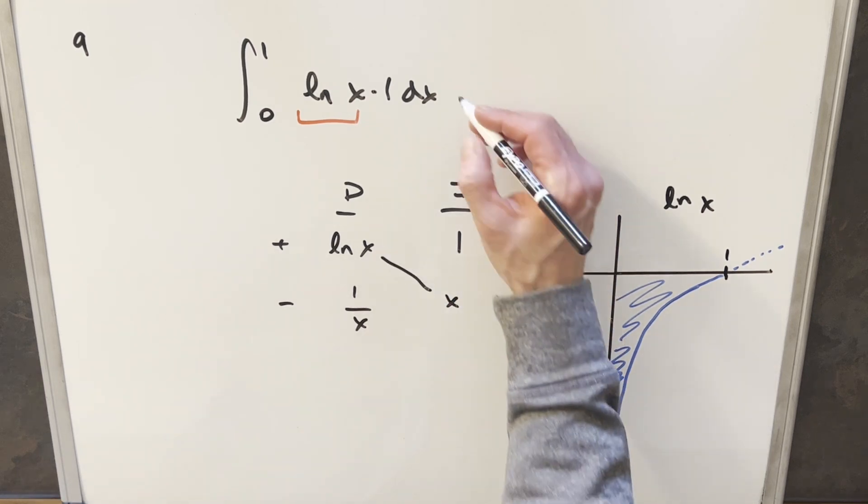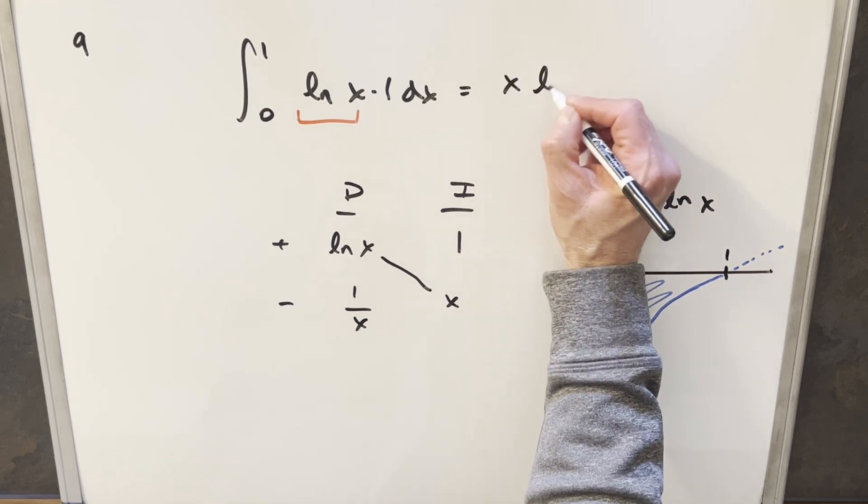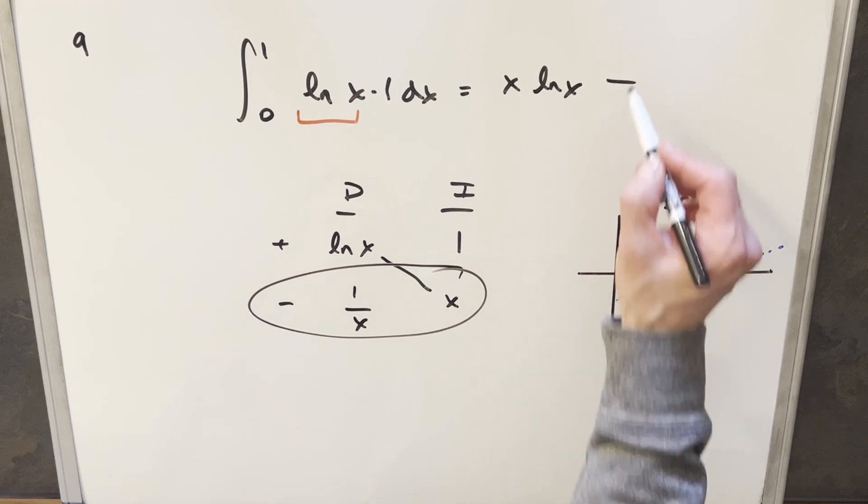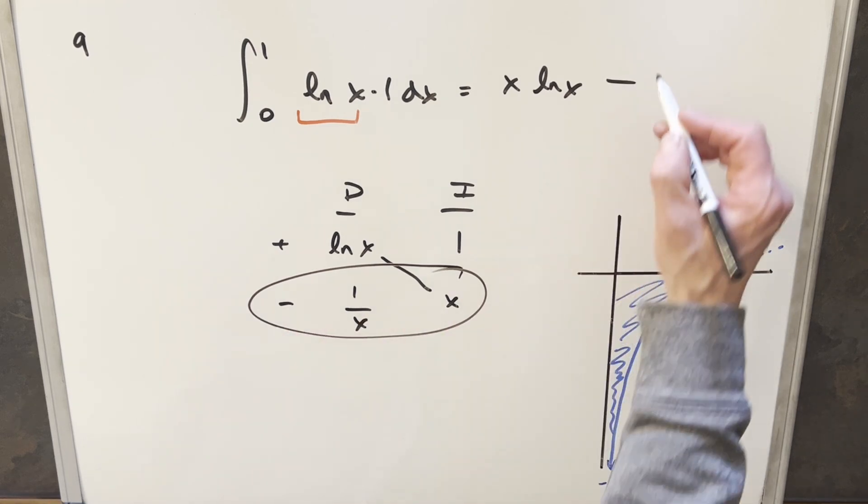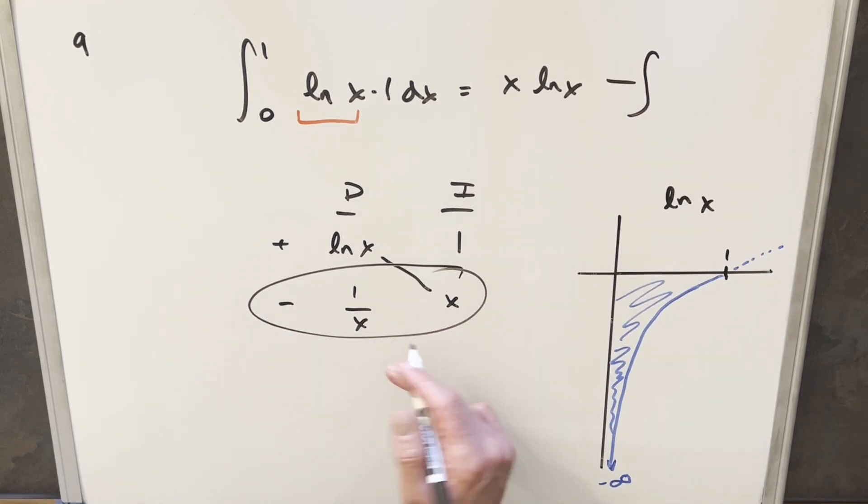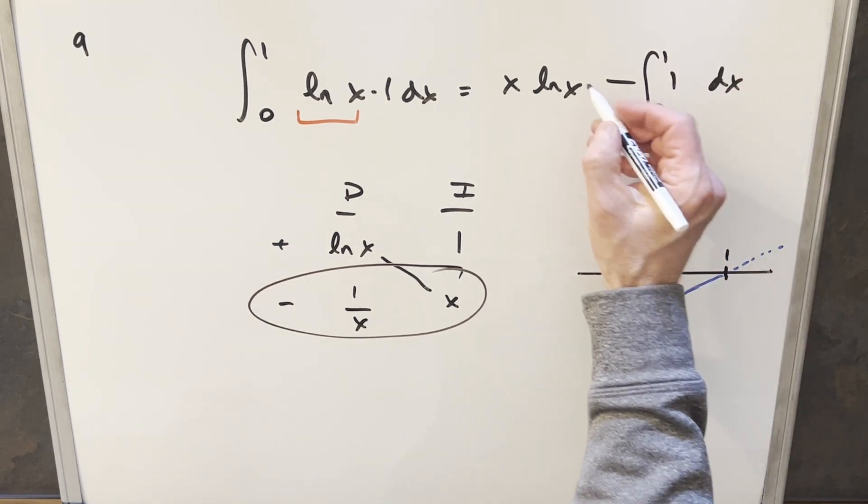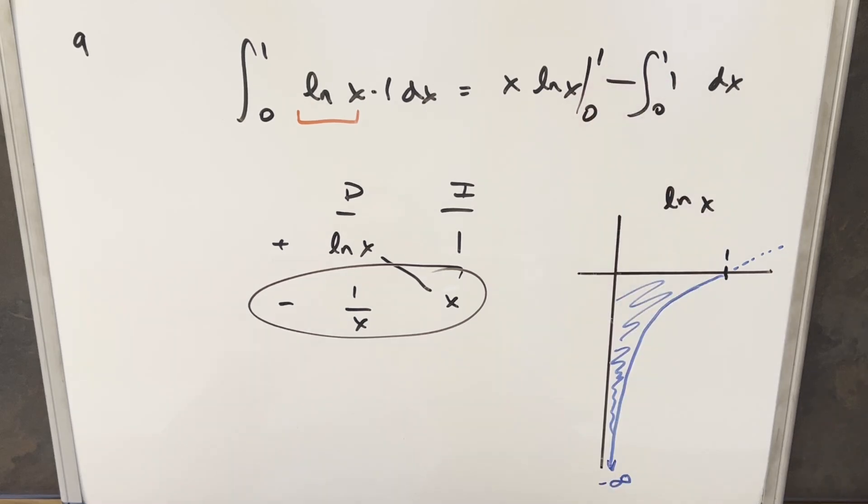Putting this together, we have part of the solution on the diagonal. We have x ln x, and then this part is going to be an integral, so we'll bring the minus out front, and we're integrating x times one over x, but that's just one. So we're integrating 1 dx from zero to one. And this part here, we're going to need to evaluate from zero to one as well.